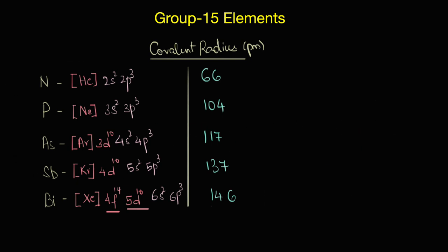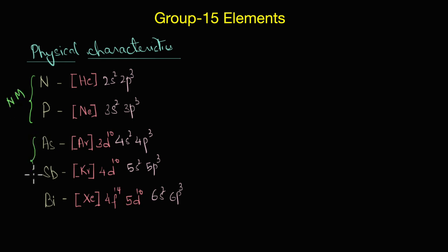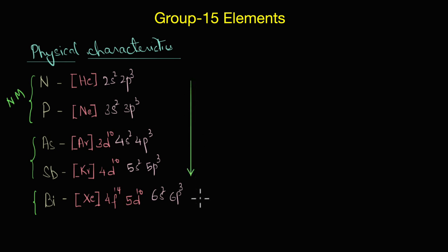Regarding the physical nature of these elements: nitrogen is the only gas, whereas phosphorus, arsenic, antimony, and bismuth are all solids. Nitrogen and phosphorus are non-metals, arsenic and antimony are metalloids, and bismuth is purely metallic in nature. As we go down the group, metallic character increases.